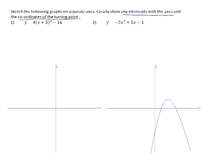In number 1, you are given the equation in the a(x-p)² + q format, so you can simply read the coordinates of the turning point from the equation. The p-value is negative 3 and the q-value is negative 16.